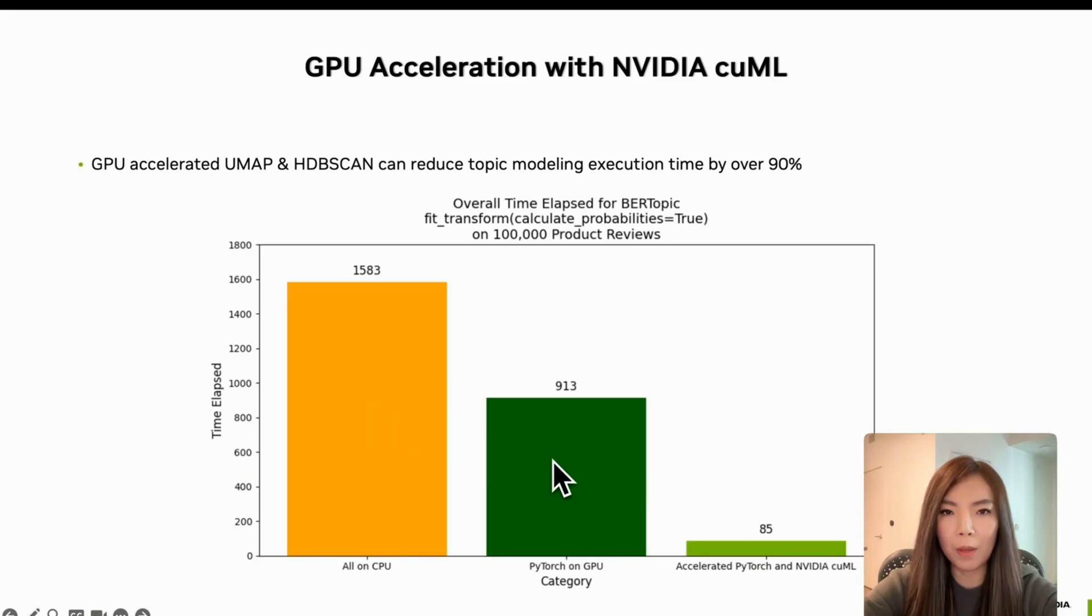In the middle, we see the improvement. We offload just the transformer embeddings to GPU with PyTorch. This alone brings the execution time down to only 900 seconds. But the real acceleration comes when we combine GPU PyTorch with GPU-accelerated UMAP and HDBSCAN through NVIDIA cuML. This drops the execution time down dramatically to just 85 seconds. This is an over 90% reduction in execution time.